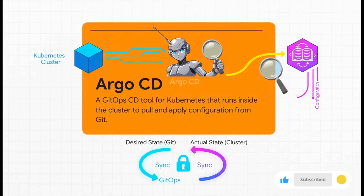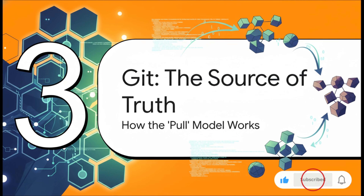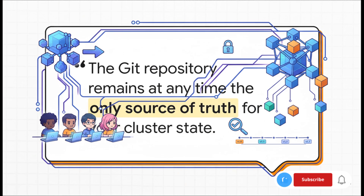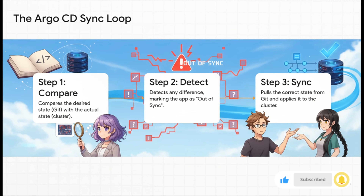This whole philosophy is what we call GitOps. It all hinges on making one single thing the undisputed ultimate authority for everything that happens in your cluster — Git. The Git repository is the only source of truth. If a change isn't in Git, it does not belong in your cluster, period. Every single configuration, every version, every setting — it all lives in a repo where you can see it, review it, and track it.